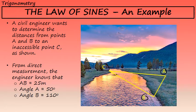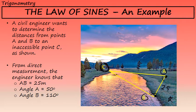Although point C is inaccessible, from direct measurement the engineer knows that side AB — the distance from A to B — is 25 meters. The two angles, angle A and angle B, are accessible. The engineer is on the right side of the river, and by direct measurement he finds that angle A is 50 degrees and angle B is 110 degrees.